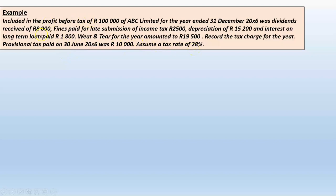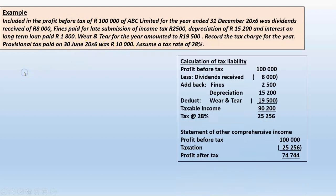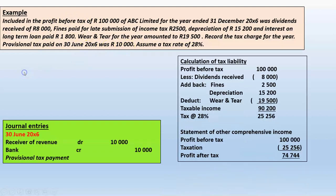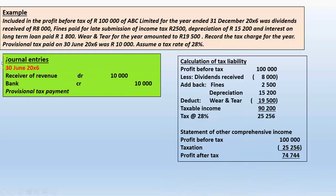The first accounting entry happens on 30 June when we pay the provisional tax. On 30 June, we debit the receiver of revenue's account with 10,000 rand and credit bank with 10,000 rand.